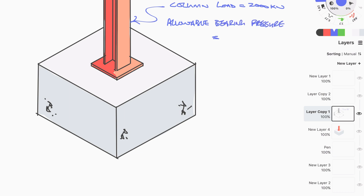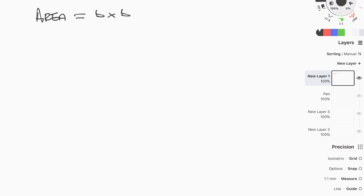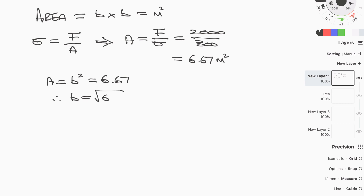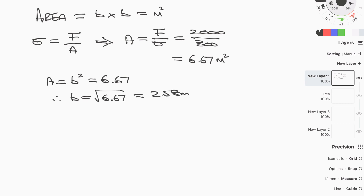Here's a pad foundation example: a 400 mm square column is to be supported on a pad foundation with a load of 2000 kN and an allowable bearing pressure of 300 kPa, with bearing strata at 1.5 meters below ground. Unlike the strip foundation, we need to find both breadth and width. Since most pad foundations supporting a single column are square to avoid eccentricities, we divide the force by the allowable bearing pressure to get the area, then square root it: 2000 ÷ 300 = 6.67 m², √6.67 = 2.58 meters.